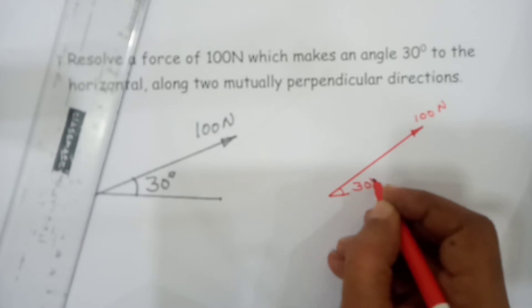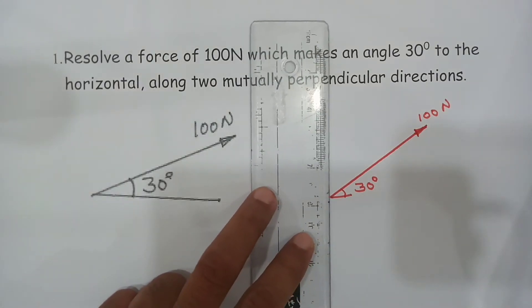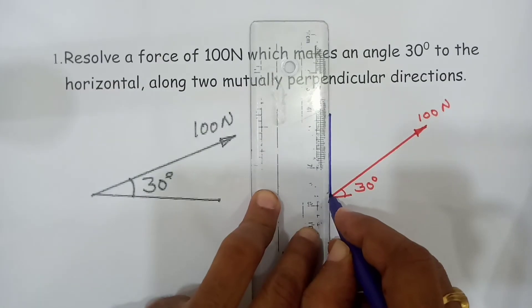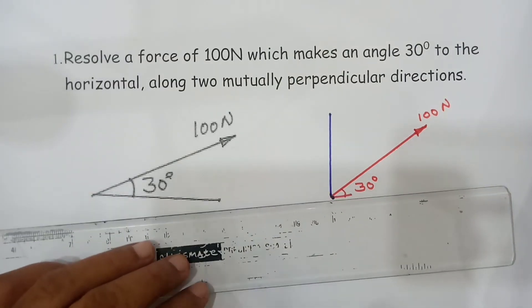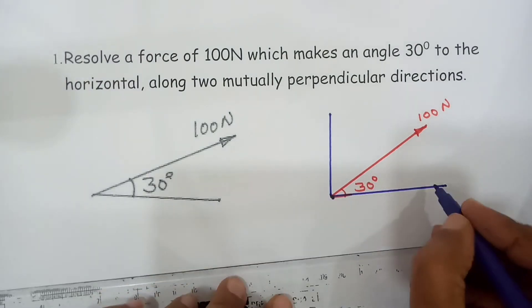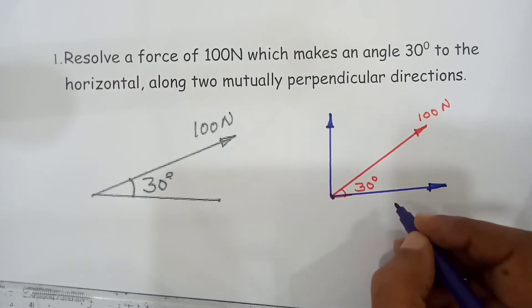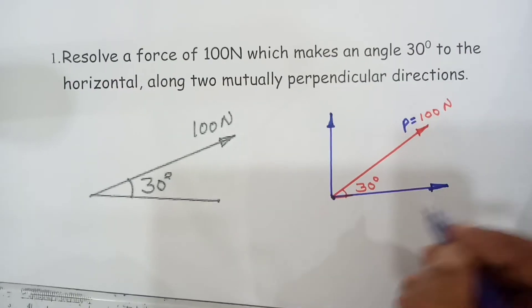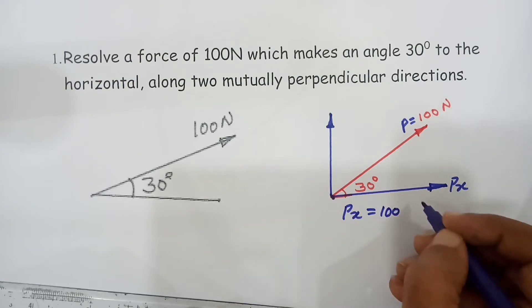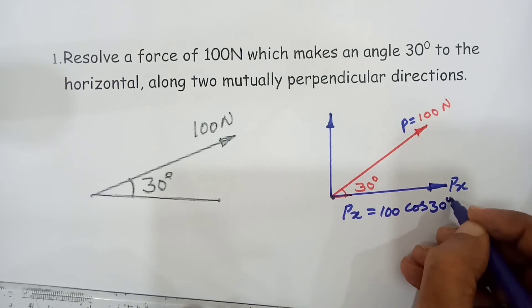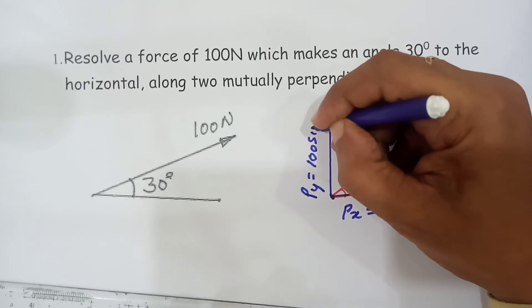This force of 100 newtons is making an angle of 30 degrees with the horizontal. To resolve this force, draw two perpendicular lines passing through the origin point of the force. If P is equal to 100, then Px is equal to 100 cos 30 degrees, and Py is equal to 100 sin 30 degrees.